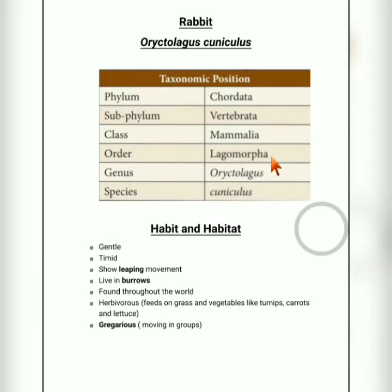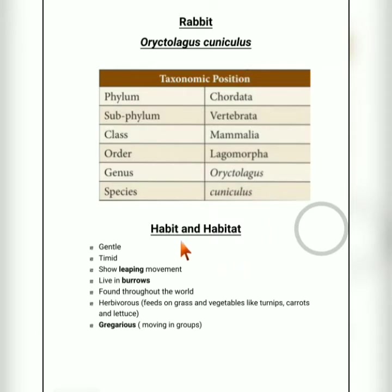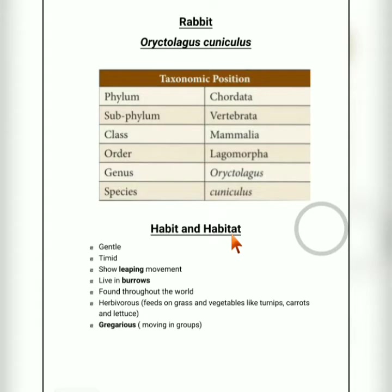Rabbit belongs to Order Lagomorpha. Genus is Oryctolagus and species is cuniculus. Now we will move on with the habit and habitat — habit means their behavioral patterns and habitat means the place where they live. Rabbits are gentle and tender organisms.